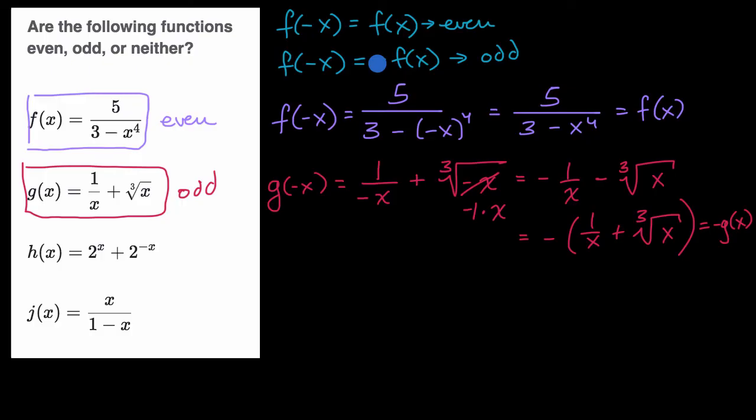And so this is odd. F of negative x is equal to the negative of f of x, or in this case it's g of x. G of negative x is equal to the negative of g of x. Let's do the third one.